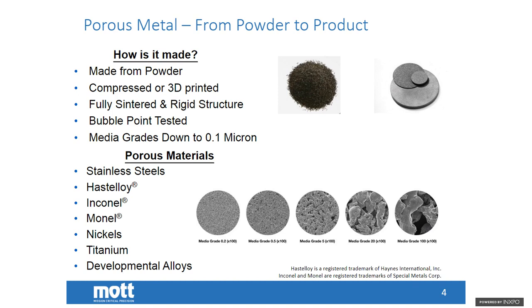After compression, we call that the green state of the product. In that state there will be porosity, but the product won't be very strong — it needs to be strengthened through sintering. Sintering is the process of heating the metal up to a temperature close to the melting point of the specific material for a designed and engineered time and temperature to produce a rigid structure. The individual powder particles begin to neck with each other, forming a little weld between one powder and another, ultimately locking in that structure.